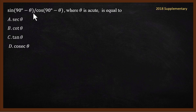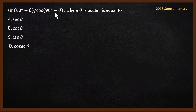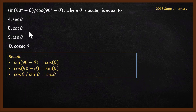The next question is from the 2018 supplementary paper. The question is: sin(90° − θ) divided by cos(90° − θ) equals what? To solve this, we will use complementary angles and the cotθ definition.